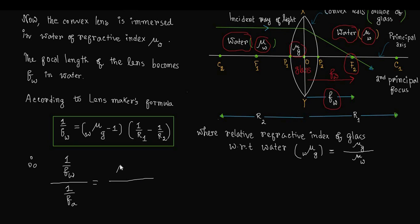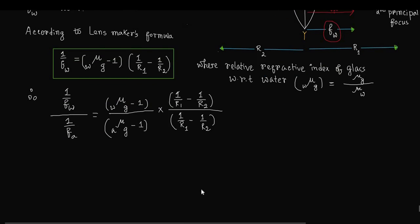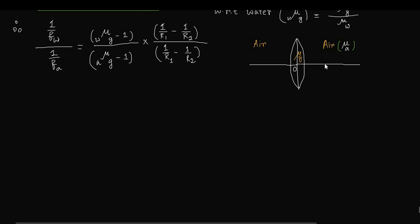Dividing the two equations: (1/Fw) / (1/Fa) = (w_mu_g − 1) / (a_mu_g − 1) × (1/R1 − 1/R2). In the diagram, the glass lens is placed in air with refractive index mu_a, and the distance of the second principal focus F2 is Fa — the focal length of the glass lens in air.